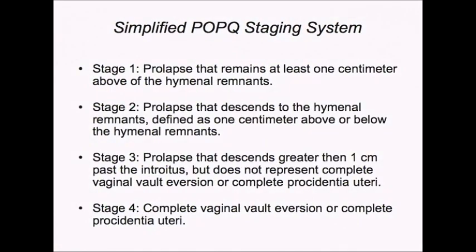The stages are then described in relation to the hymeneal remnants. Stage 1 is prolapse that remains at least one centimeter above the hymeneal remnants. Stage 2 is prolapse that descends to the hymeneal remnants, defined as one centimeter above or one centimeter past the hymeneal remnants. Stage 3 is prolapse that descends greater than one centimeter past the hymeneal remnants but does not represent complete vaginal vault eversion or complete procidentia.